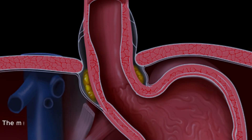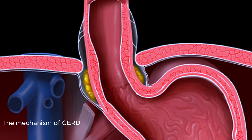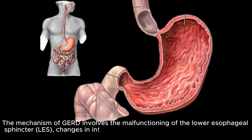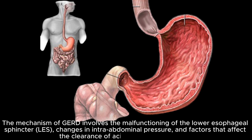The mechanism of GERD involves the malfunctioning of the lower esophageal sphincter (LES), changes in intra-abdominal pressure, and factors that affect the clearance of acid from the esophagus.